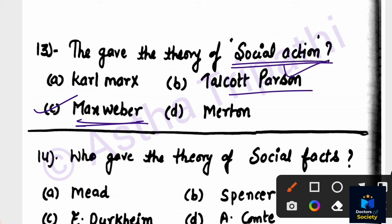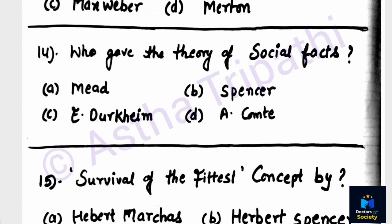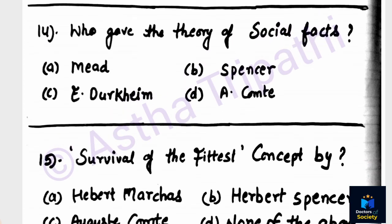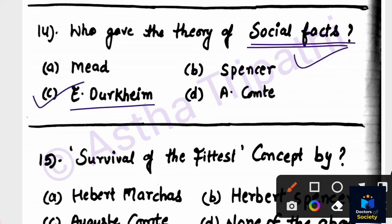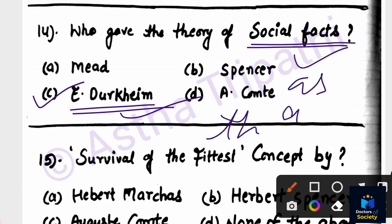Question number thirteen: Who gave the theory of social facts? Options are Mead, Spencer, Emile Durkheim, Auguste Comte. The answer is Emile Durkheim — he talks about social facts and treats them as things (as a 'thing' in their own right).